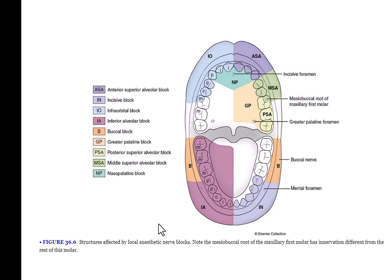Here's an excellent visual from the textbook showing what each type of local anesthetic numbs. Looking at the ASA — anterior superior alveolar block — anterior means front teeth, superior means maxilla. The ASA numbs the teeth, the gum, and the lip. Everything shaded in purple is numbed.